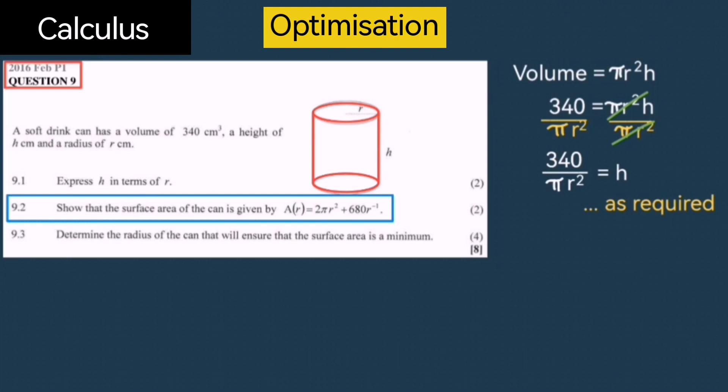Question number two: Show that the surface area of the can can be given by A(R) = 2π r² + 680 × r⁻¹. In order to do this, we first need to recall what is our surface area formula for a cylinder. The surface area formula for a cylinder is 2π r² + 2π rH.